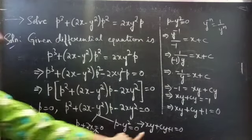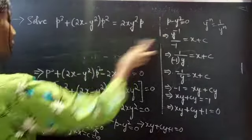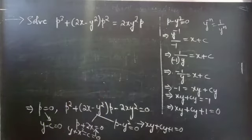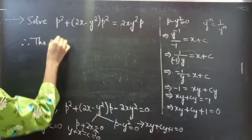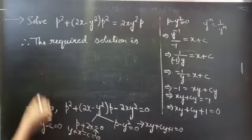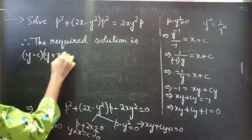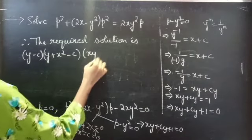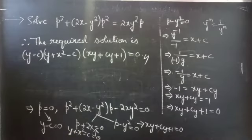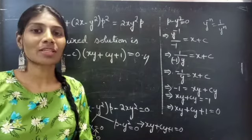The combination of these three solutions is the required solution for the given equation. Therefore, the required solution is Y minus C times Y plus X square minus C times XY plus CY plus 1 equals to 0. We have seen a problem from the solvable for P method. Hope you understood. We will see you in the next video. Bye-bye.